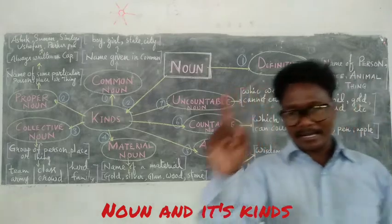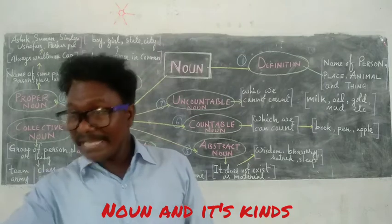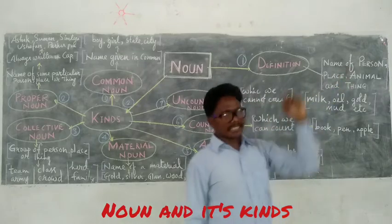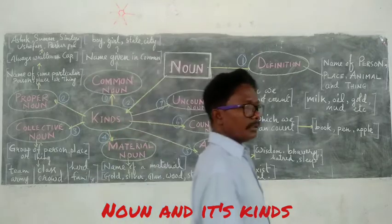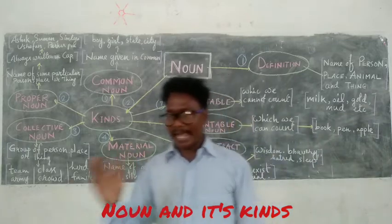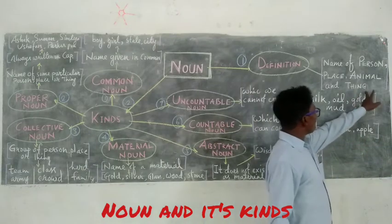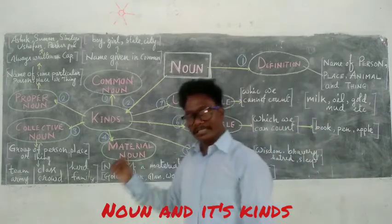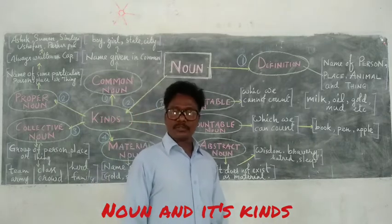Can you name some persons? Ranjan, Rabi, Anuranjan, Ramesh. Can you name some places? Sindaga, Raurkela, Ranji. Can you name some animals? Tiger, Lion. Can you name some things? Table, Chair, Chalk, Dustbin. That means you have understood what a noun is.